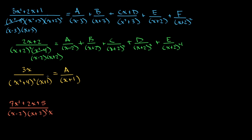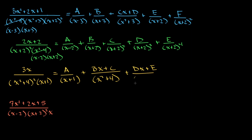All we're going to do is combine those two ideas. When we have an irreducible quadratic factor like x squared plus 4, we want one degree less in the numerator, so we get (Bx + C) over (x squared plus 4). And then combining with the repeating idea, we also have (Dx + E) over (x squared plus 4) squared. That is our partial fraction setup for this expression.